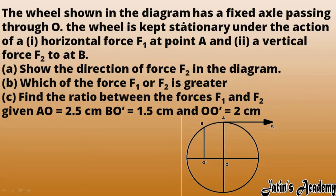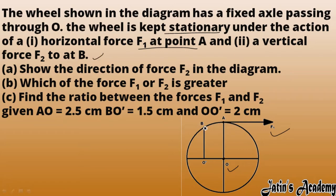We have a wheel shown in the diagram with a fixed axle passing through O, meaning O is a fixed point. The wheel is kept stationary under the action of a horizontal force F1 at point A and a vertical force F2. We have to first show the direction of force F2 in the diagram, then determine which of F1 or F2 is greater, and finally find the ratio between F1 and F2. AO, BO', and OO' are given values we will use in the third part.